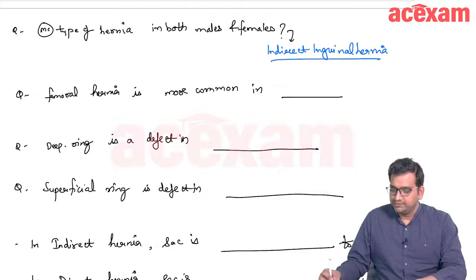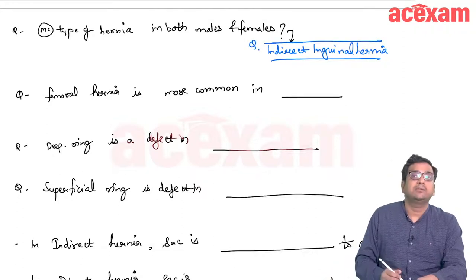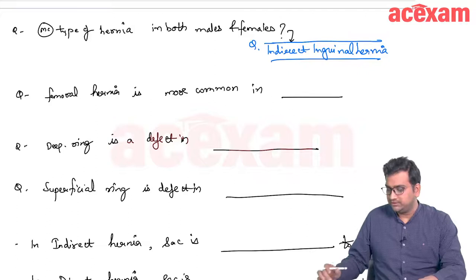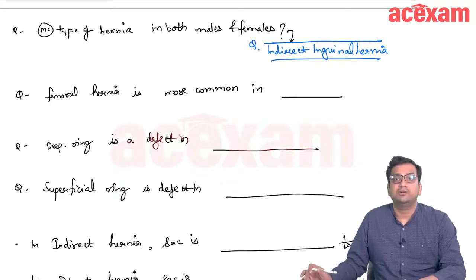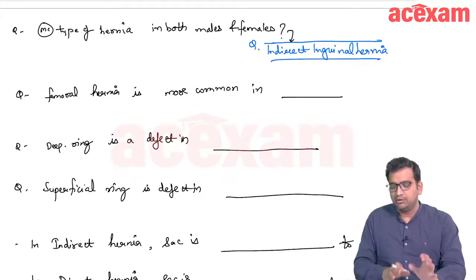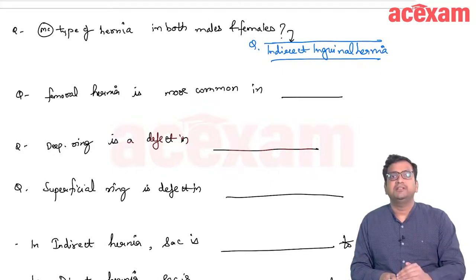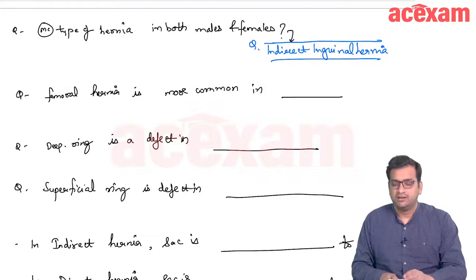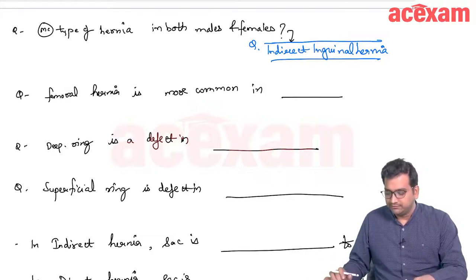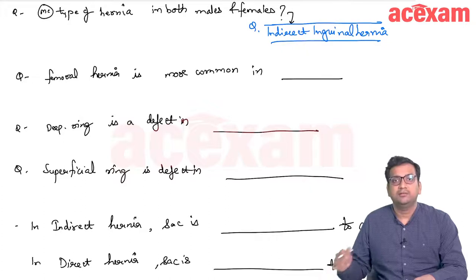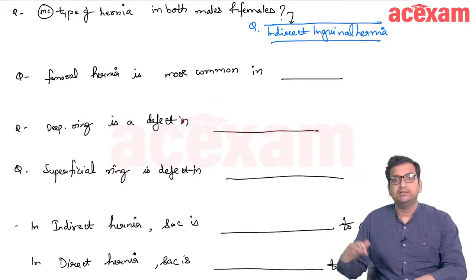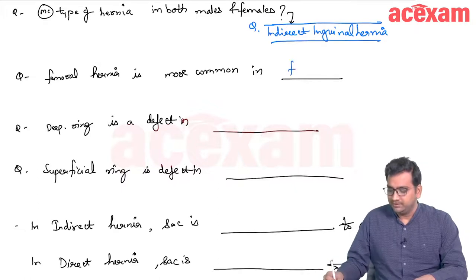Some important high-yield questions: The most common type of hernia in males is indirect inguinal hernia. The most common type in females is also indirect inguinal hernia. Femoral hernia is more common in females.